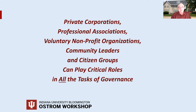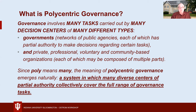In democratic societies, governance should not be seen as something distinct that the government does to us. Instead, it should directly involve a great many of us as active participants. If you want to understand how polycentric governance operates in the US or anywhere else, you need to understand who has been participating in different ways, and why and how they chose to intervene in those matters of public concern. Since governance requires many tasks to be accomplished, each requiring actions of different types of decision centers—both public and nonpublic—the process of governance involves many different decision makers acting in interdependent ways. Since 'poly' means many, the meaning of polycentric governance follows naturally: a system in which many diverse centers of partial authority collectively cover the full range of governance tasks.